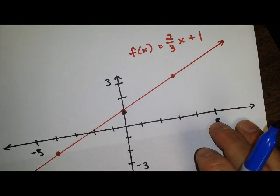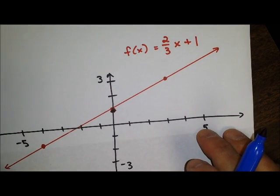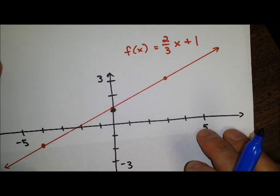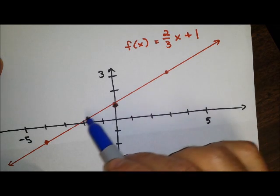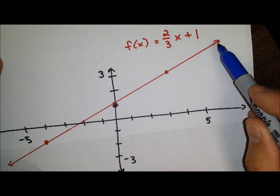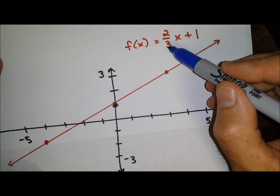The next one, I have a linear function f of x equals two thirds x plus one. As we look along this line, we see that our slope is constant. We can even see it right here.